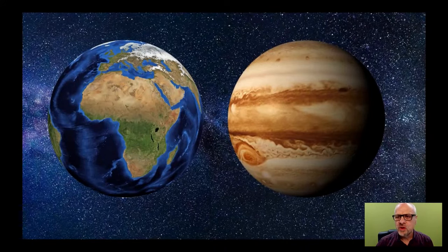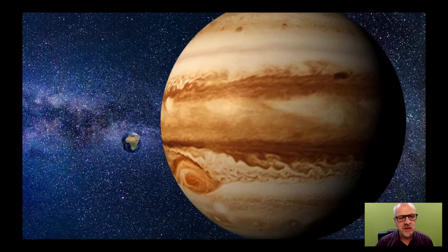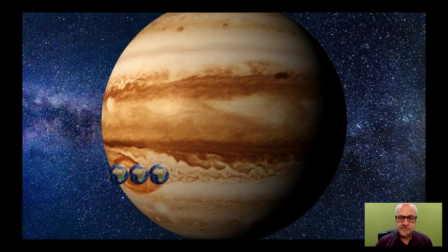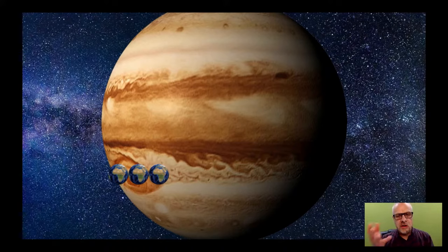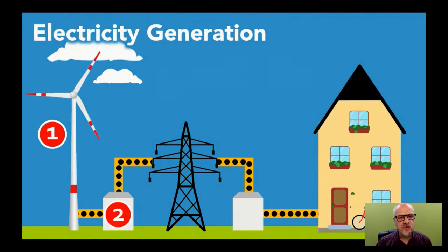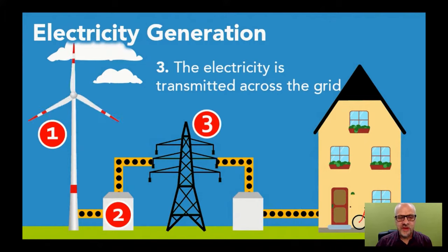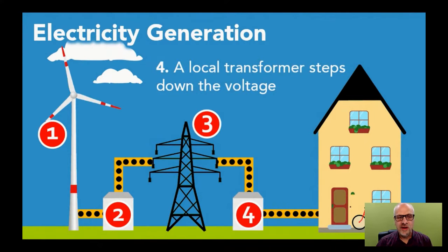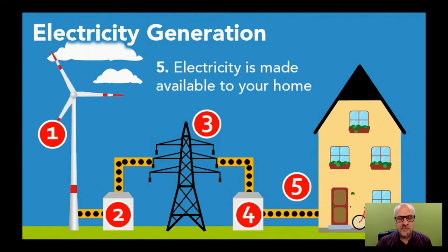What about clarification? Here we have Earth and Jupiter. If we shrink and expand them to their relative sizes, you can see that the Earth fits into Jupiter's great red spot three times over — that clarifies the message. And finally, explanation: here is a simple explanation of the electricity generation process, going from the wind turbine through to the step-up transformer, across the grid, into the step-down transformer, and finally made available to your home. That slide explains a complex subject in very simple ways.